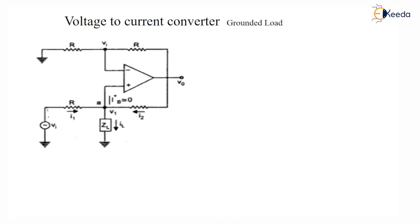One is voltage to current converter with grounded load and another one is voltage to current converter with floating load. This is the configuration of voltage to current converter with grounded load.